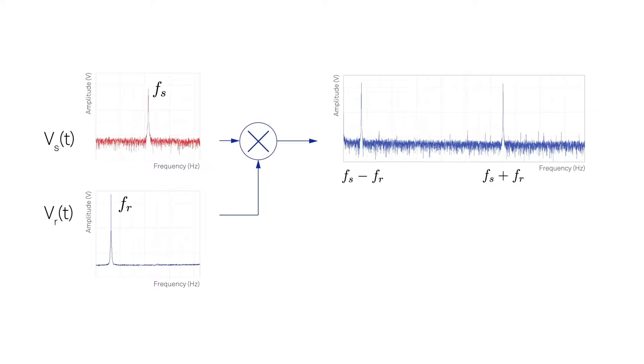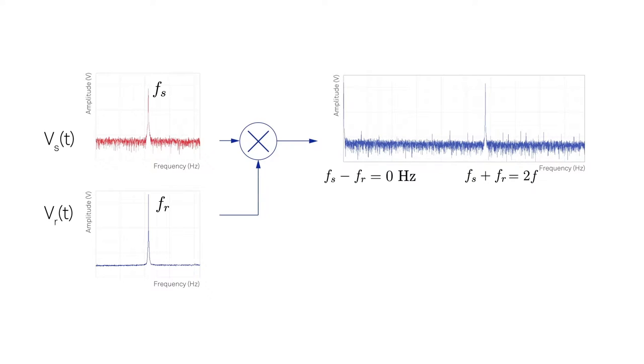For most lock-in applications, signal frequency and reference frequency are identical, and equal to F, so we end up with a component at the DC, or 0 Hz, and another component at twice the frequency, or 2F.